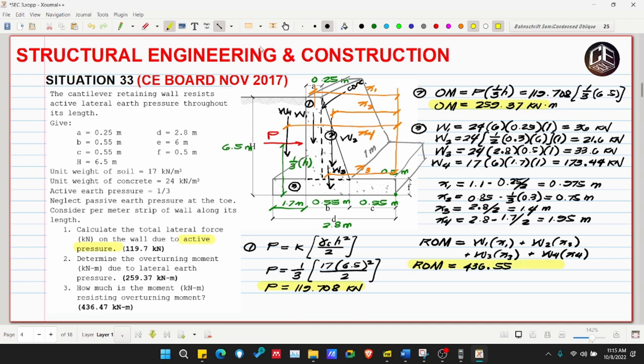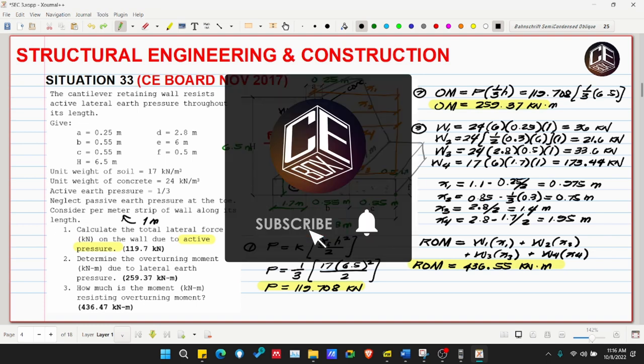This problem is relatively straightforward, but you need to imagine what the retaining wall looks like in 3D. Even if the actual length is 2 meters, we consider per meter length or per meter strip as stated in the problem, because retaining walls are very long structures. This was Situation Number 33 from the CE Board exam November 2017. If you enjoyed and learned from this video, please subscribe and hit the bell icon for notifications and updates on our YouTube channel. Thank you for watching, bye bye.